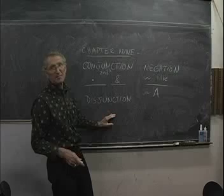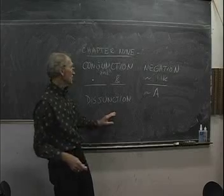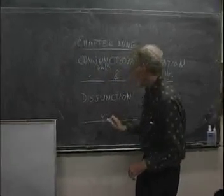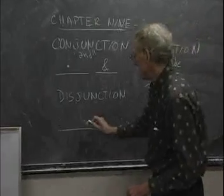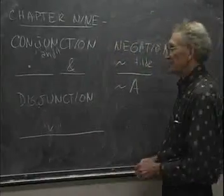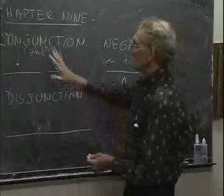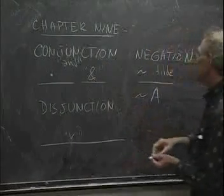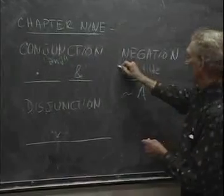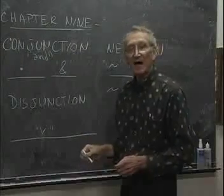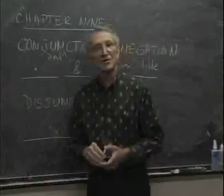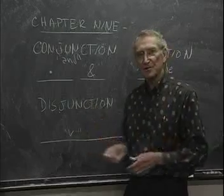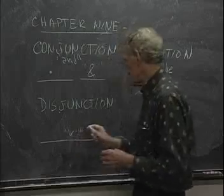Disjunction gets a little more difficult. Disjunction has a special symbol — it's the Latin 'vel,' but we symbolize it by a lowercase V, which you can find on your keyboard. So the three symbols introduced to this point are: conjunction, which we use the ampersand for; negation, the tilde; and disjunction, the lowercase V. Now, a little bit more about disjunction, because this is a special type of either/or — so the V is the sign for 'either/or.'